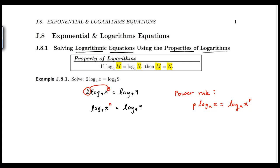Notice here, our logs have no coefficients in front of each. The bases are the same, so now we could go ahead and use this property of logarithms to say that x squared must be equal to 9.